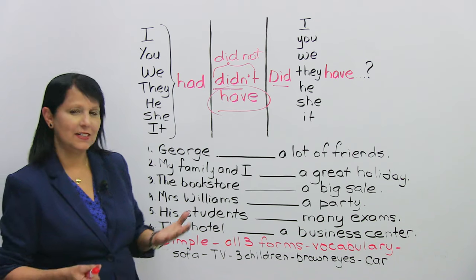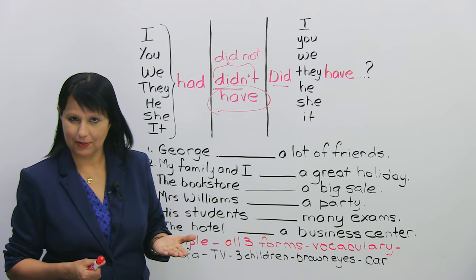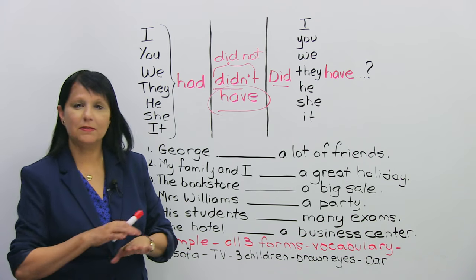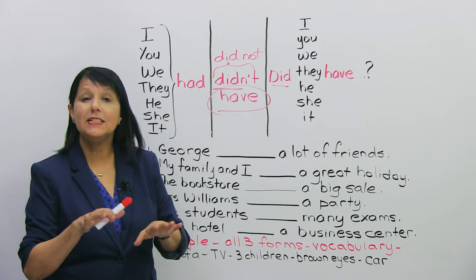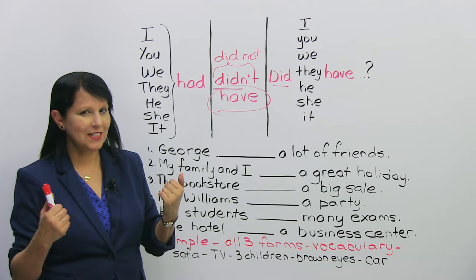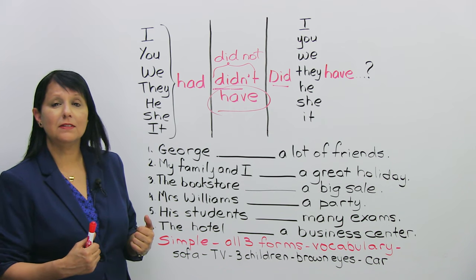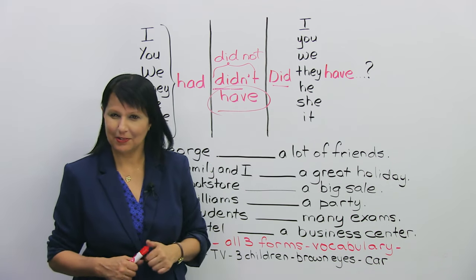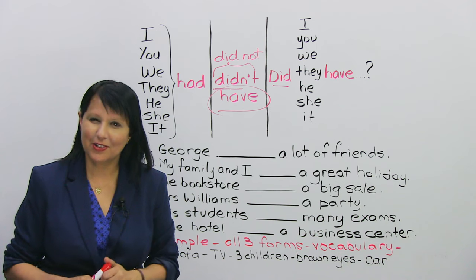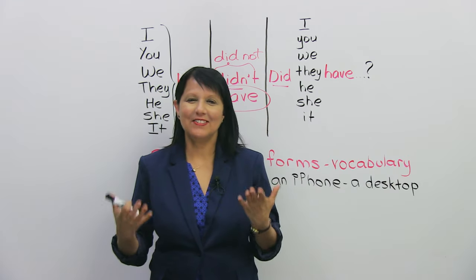And the last one here. The hotel had a business center. The hotel, negative, didn't have a business center. Question. Did the hotel have a business center? Okay? Very good. Really, really good.